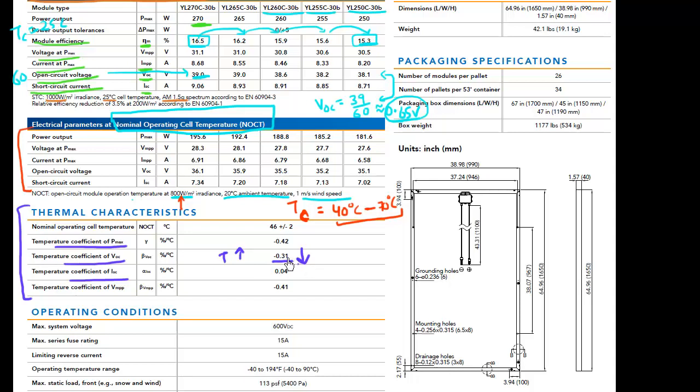So it decreases by 0.31 percentage points. So these things are reported by percentage points per degree centigrade. So if I increase my temperature by one degree centigrade, this VOC will essentially decrease by 0.31 percent. Similarly, if I increase my temperature, my short circuit current typically increases because my band gap of my solar cell decreases. So my short circuit current increases. So this has a positive temperature coefficient.